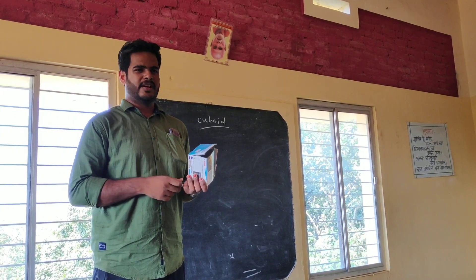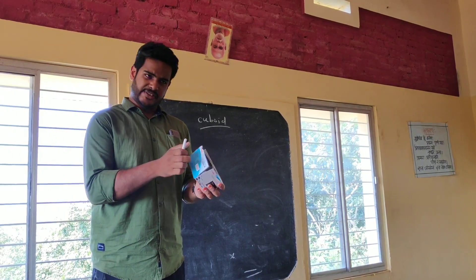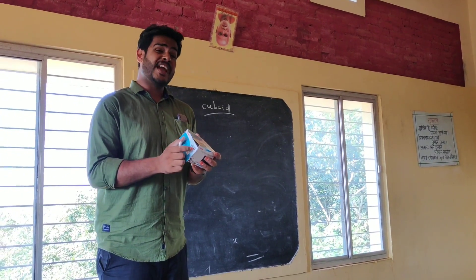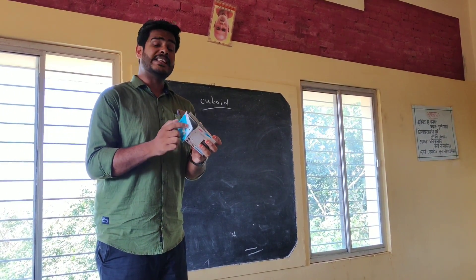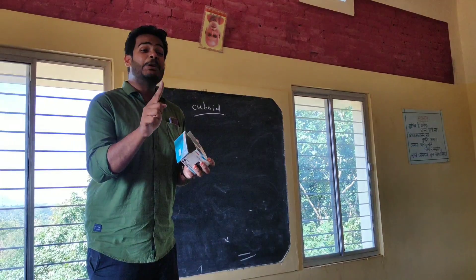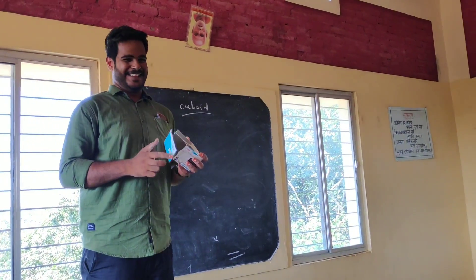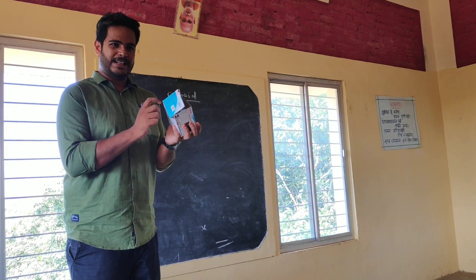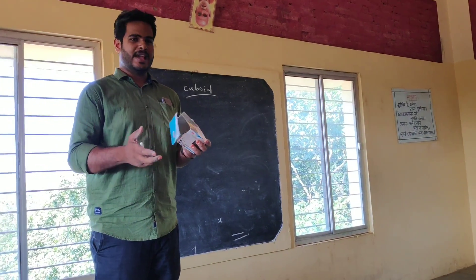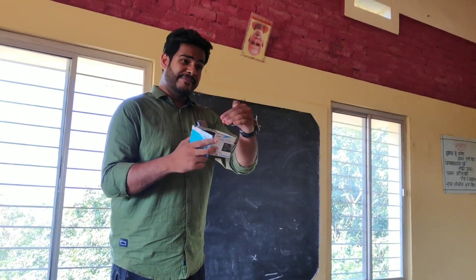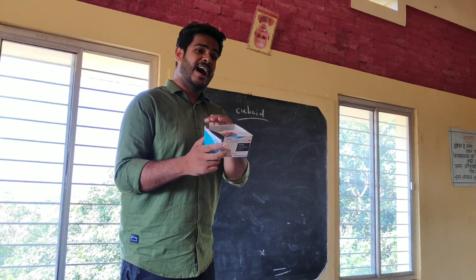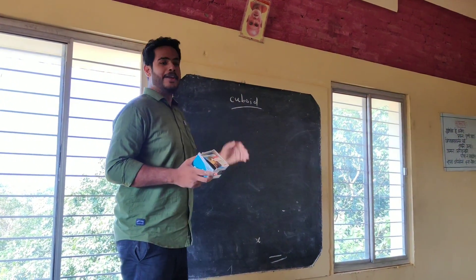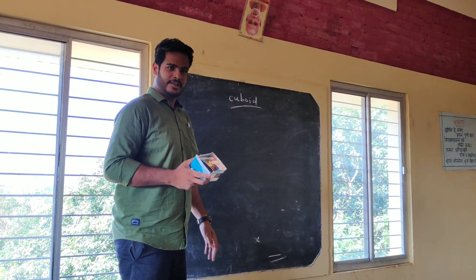What is the meaning of cuboid? It is a solid — moreover, it is a three-dimensional figure, that is, it has length, breadth, and height. Each of its faces is in the shape of a rectangle. Therefore it is a cuboid.